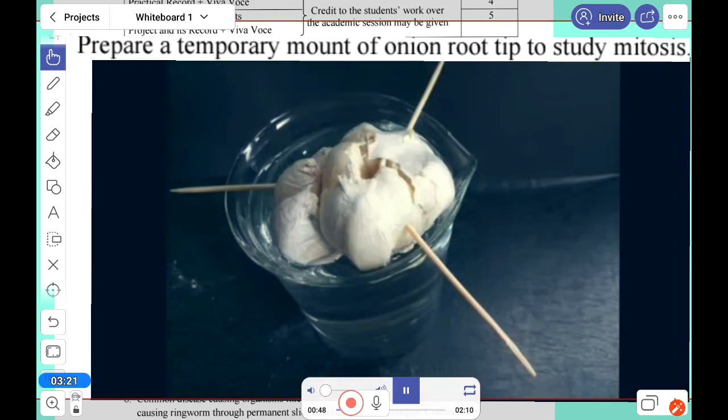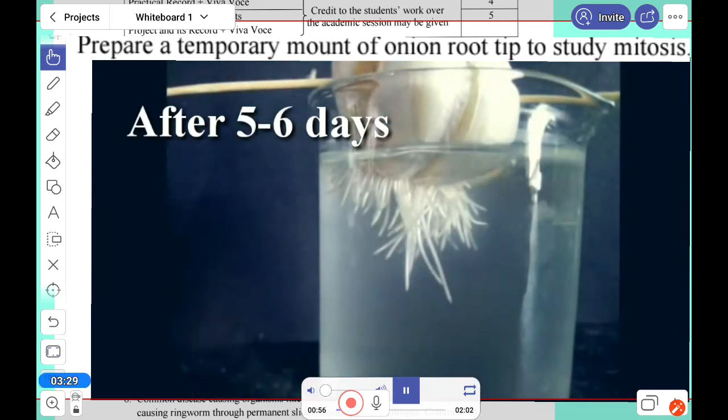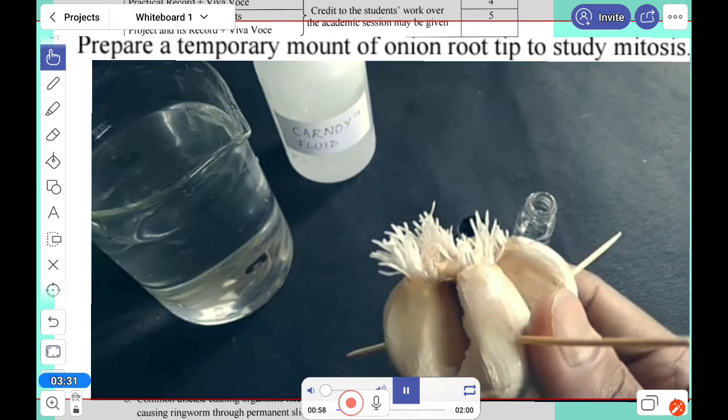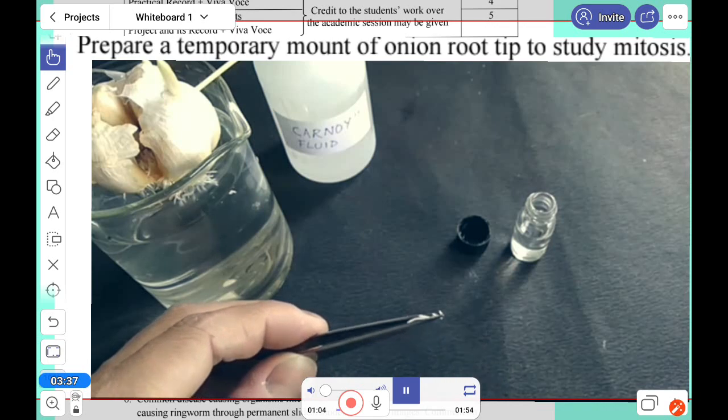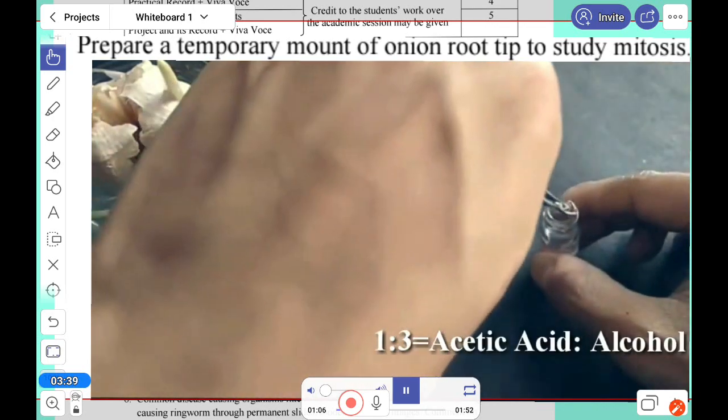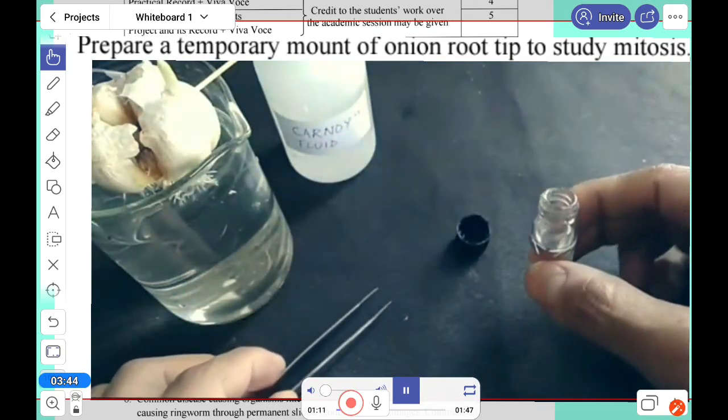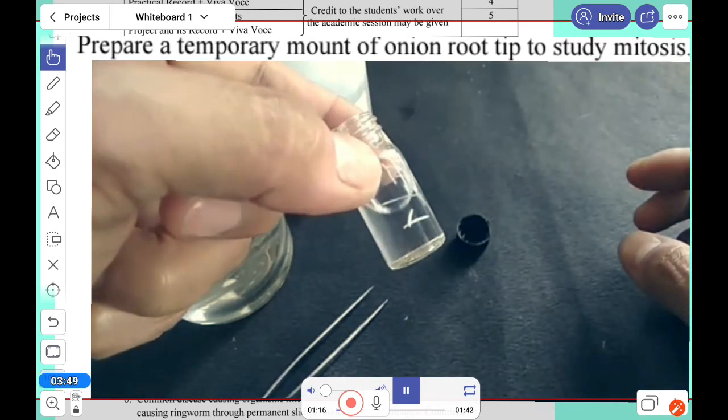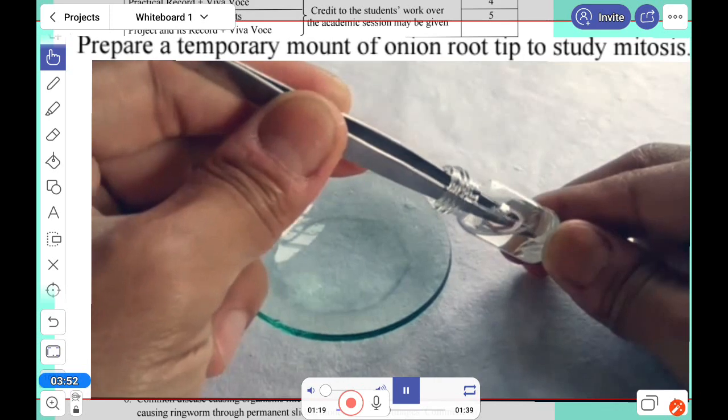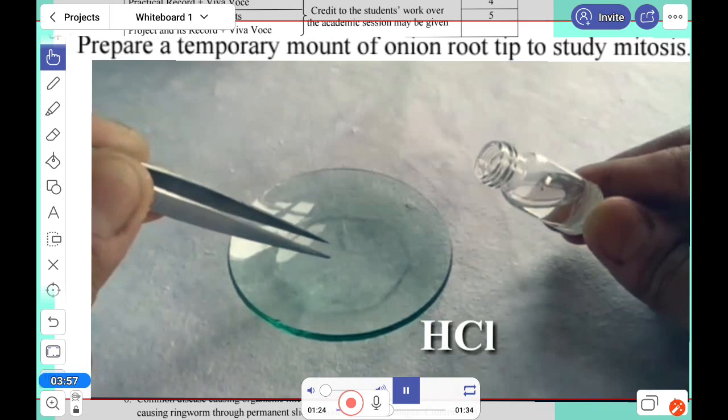Now the process. Here we have taken the garlic and we have scrapped the old roots. After five to six days in plain water, the roots emerge. We have to take out one centimeter in daytime and keep it in acetic acid and alcohol, one is to three, in an empty vial for 48 hours.